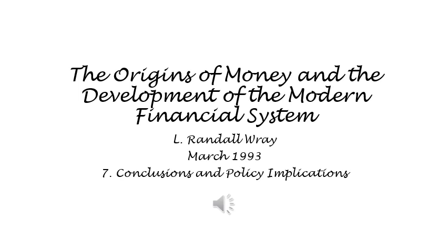Thus it is argued that the money supply was exogenous in the past, determined by the quantity of commodity money. As this analysis has made clear, however, this could not have been the case. The current system, based on central bank reserves, did not evolve out of a commodity money system. Rather, the commodity money reserve evolved out of an endogenous money system to solve one of the problems with a monetary economy. In any monetary economy, the vast majority of assets denominated in the money of account consists of private IOUs, the value of which depends on the economic condition of their issuers.